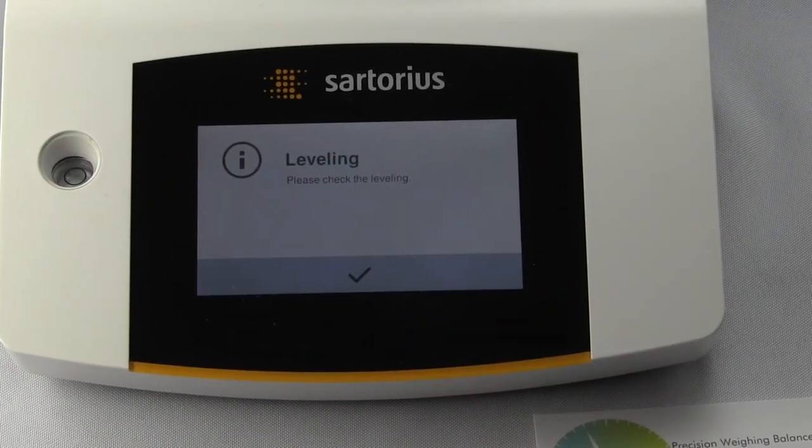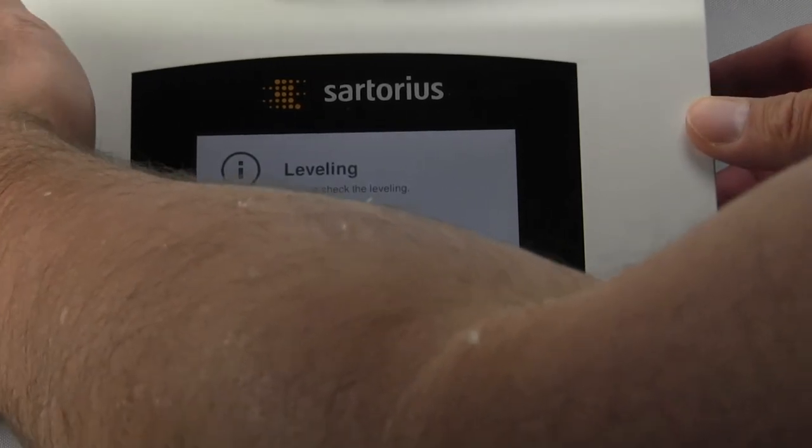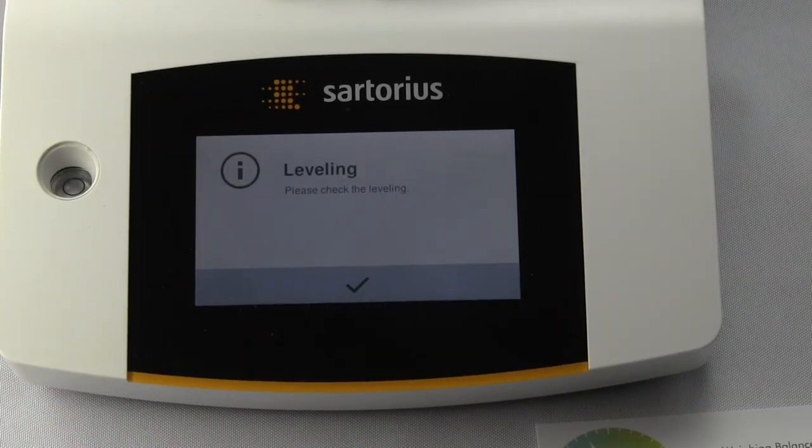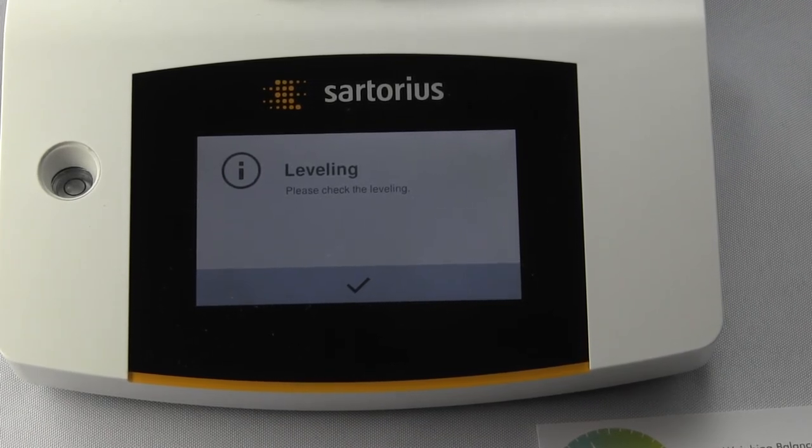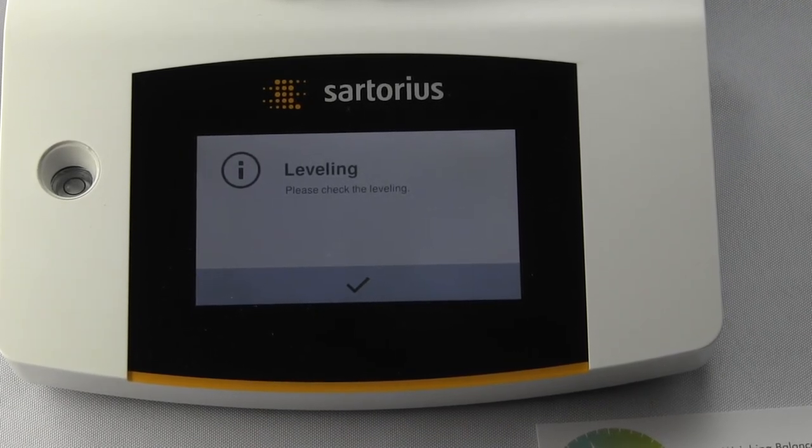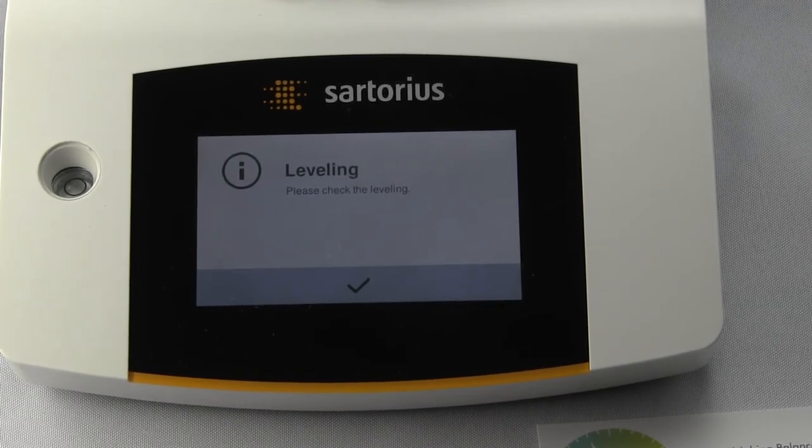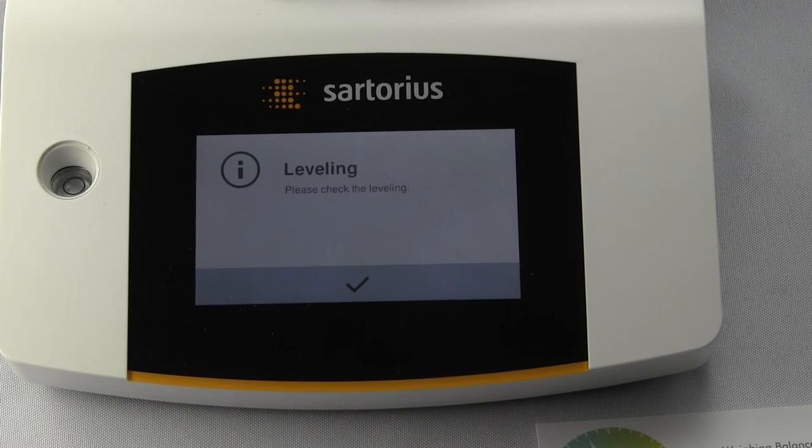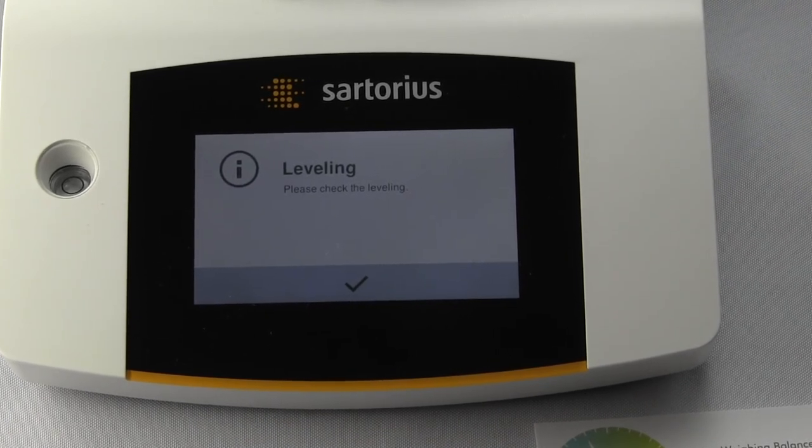The first thing it's going to ask you is to level the balance. We have a spirit bubble indicator here in the left hand corner. You adjust your two leveling feet. It's always important to attain precise weighing results that your bubble is right in the center so your balance is level. These adjustable feet compensate for any uneven bench space.